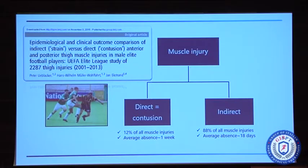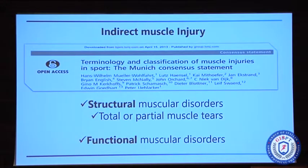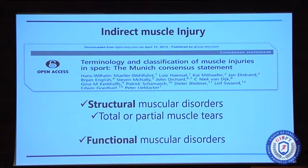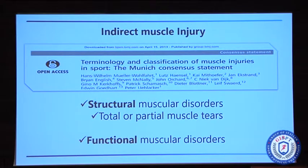That's why we need a classification to be better in predicting return to play. The good thing with the Munich consensus system is that it defined a new definition of two types of muscle injury: the structural injuries and the functional injuries. The structural injuries are tears, partial or total. The functional muscle disorders are all the other injuries — not tears visible on ultrasound or MRI. So this is a great separation into two big groups of injuries.